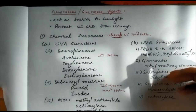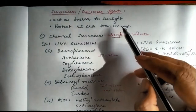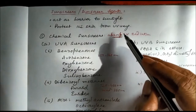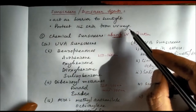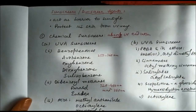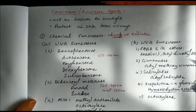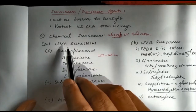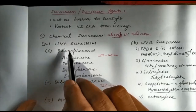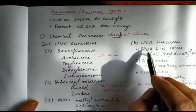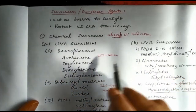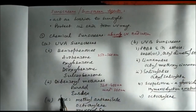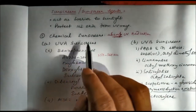Sunscreens are agents which act as barriers to sunlight and protect the skin from UV rays. There are two types: chemical sunscreens and physical sunscreens. Chemical sunscreens effective against UVA are called UVA sunscreens, and those effective against UVB are called UVB sunscreens. These agents absorb UV radiation.